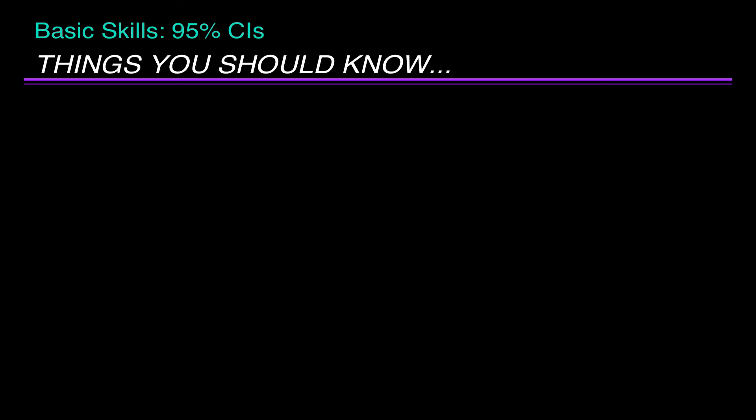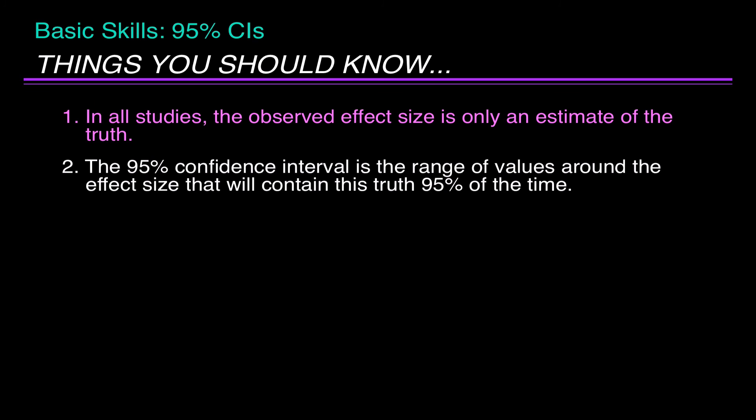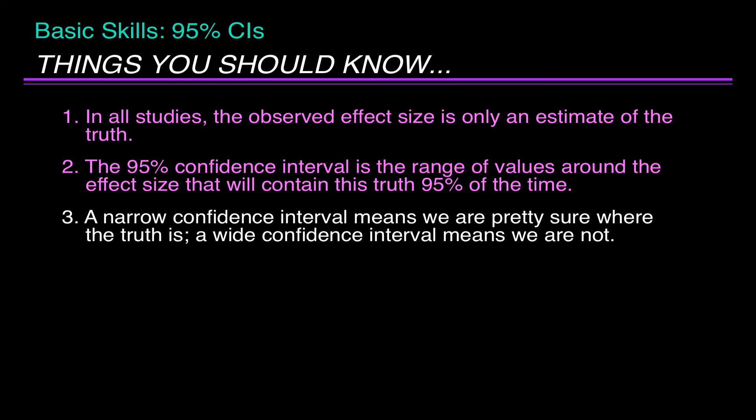So, here are the things you should know about 95% confidence intervals. In all studies, the observed effect size is only an estimate of the truth. The 95% confidence interval is the range of values around the effect size that will contain the truth 95% of the time. A narrow confidence interval means we're pretty sure where the truth is. A wide confidence interval means we are not.